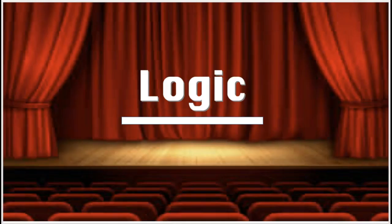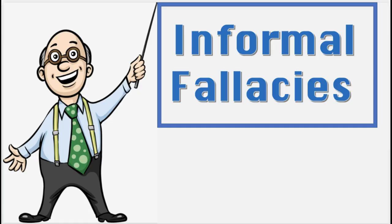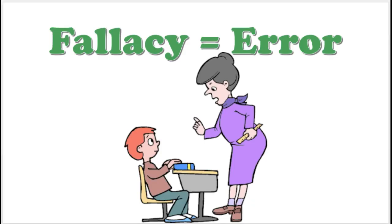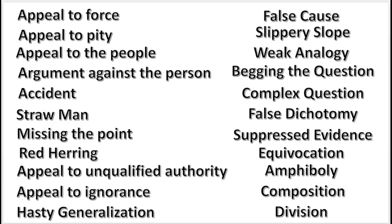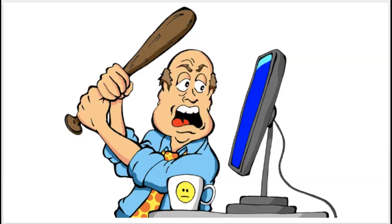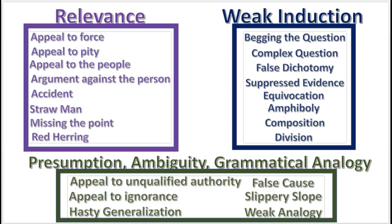Ladies and gentlemen, welcome to this episode in Logic. We are currently discussing informal fallacies. A fallacy is an error or a defect in an argument. Here is a list of some 22 informal fallacies. I know it seems like a lot to learn, and it is, but this logic series is the easiest and fastest way to learn it. These 22 informal fallacies can be divided into three categories.